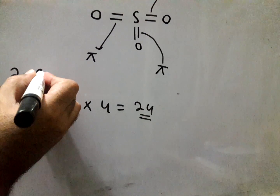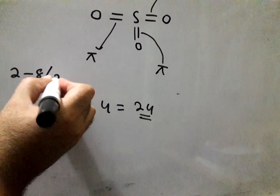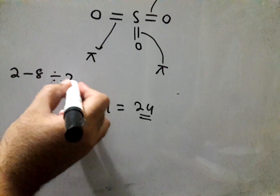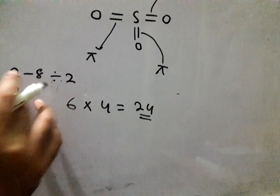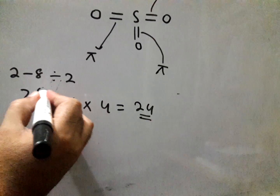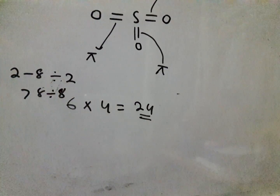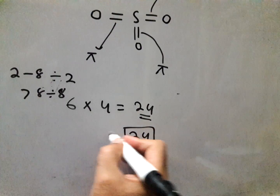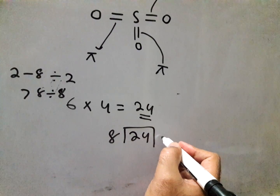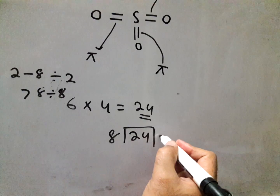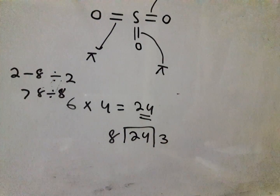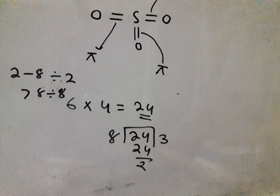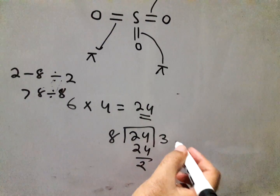The rule is: if the number of electrons is between two and eight, divide by two; if more than eight, divide by eight. Since we have twenty-four, twenty-four divided by eight equals three.